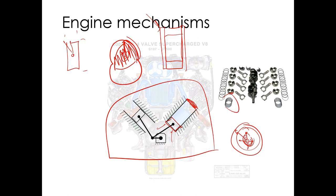That slow propagation can cause unburnt fuel-air mixture in the exhaust, which kills power, fuel economy, and emissions. One way of solving this problem is using two spark plugs per rotor — Mazda rotaries usually have two spark plugs per rotor, so four spark plugs total in a two-rotor engine like the RX-8.